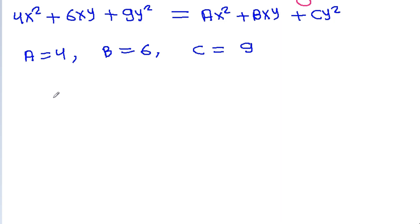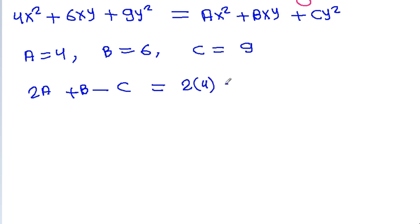We have to find the value of 2a + b - c, and it is 2 times 4 plus 6 minus 9. That is 8 + 6 = 14, minus 9 = 5.